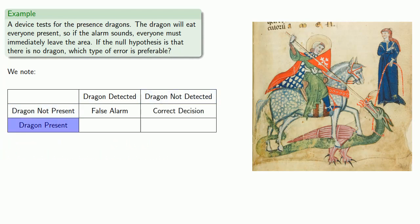If there is a dragon present, and the alarm goes off, that's a correct decision. And if there's a dragon present, but the alarm does not go off, that's a missed alarm.